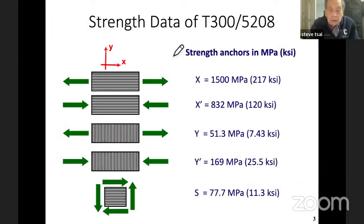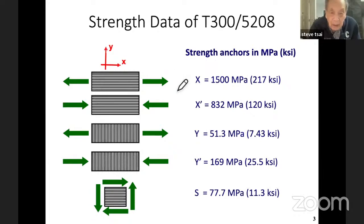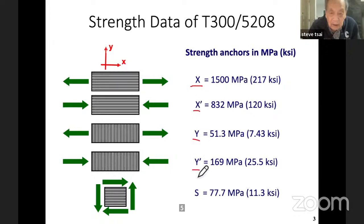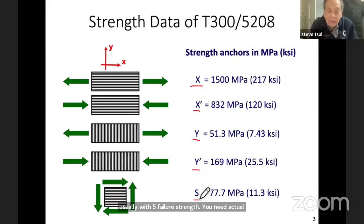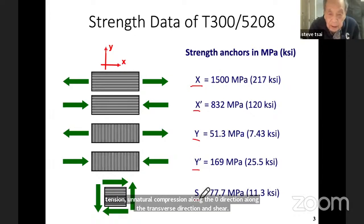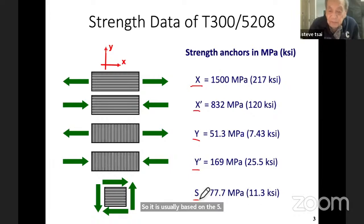For orthotropic materials — this is what we'll talk about — that we use for composite materials. We usually work with five failure strengths: uniaxial tension, uniaxial compression along the zero direction, along the transverse direction, and shear. It is usually based on these five strength parameters from which you do the curve fitting for the failure criteria.